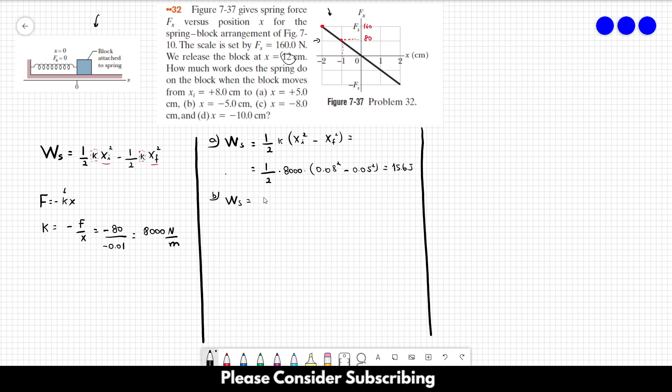So it's equal to 1 over 2 times 8,000. The initial position is always the same, so 0.08 squared, and now we have minus 0.05 squared. And this gives us the same answer as before, because it's a negative value, and you square it, so it becomes positive again. So it's also 15.6 joules.